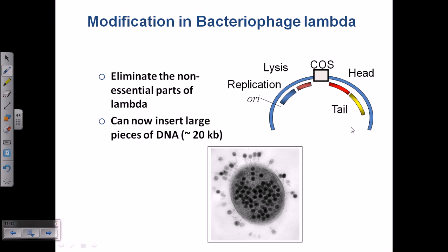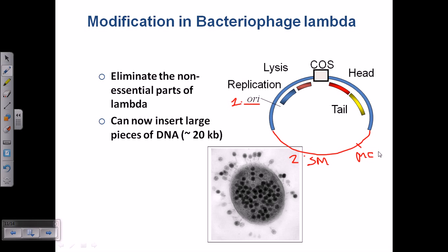By cutting the 19 kb extra junk element responsible for the lysogenic cycle, what we get is a modified lambda phage. It is also having the origin of replication — first criteria. Second criteria: selectable markers must be present. Also, a multiple cloning site must be added. So we need to add selectable markers as well as a multiple cloning site.